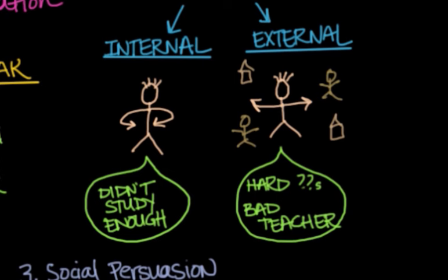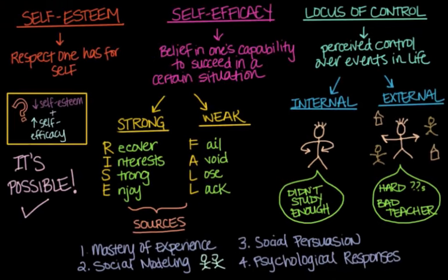People with an internal locus of control feel that they control their own destiny, rather than their fate being largely determined by external forces. They tend to be happier, less depressed, and less stressed. Hopefully this video was able to clarify the differences between self-esteem, self-efficacy, and locus of control.